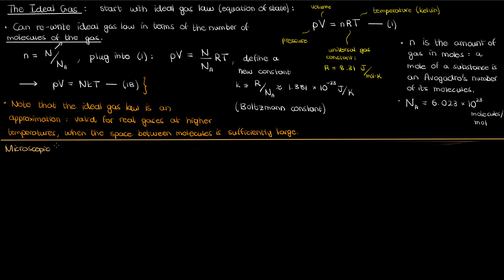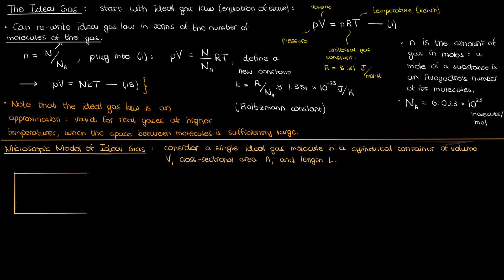Now let's look at a microscopic model of an ideal gas by examining the behavior of a single particle. Let's say that we have a single ideal gas molecule in a cylindrical container with a volume V, cross-sectional area A, and length L. The cylindrical container has a piston at the end like so, which is responsible for the pressure being put on our system. Of course, the volume V is just capital A times L.